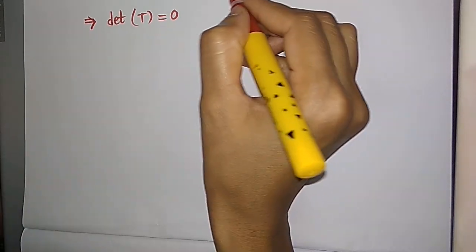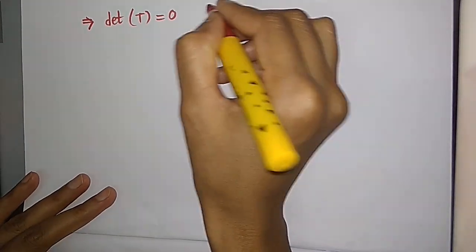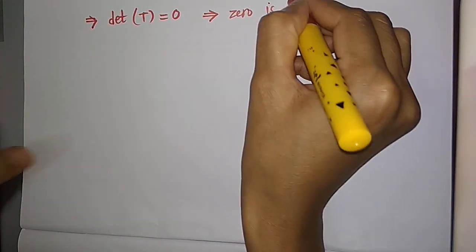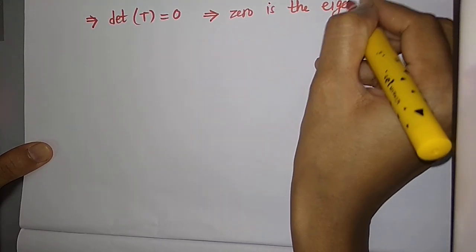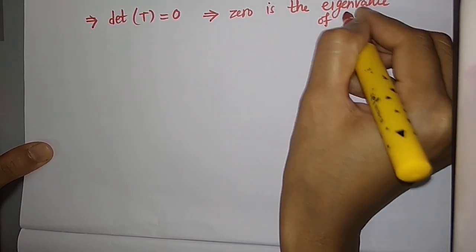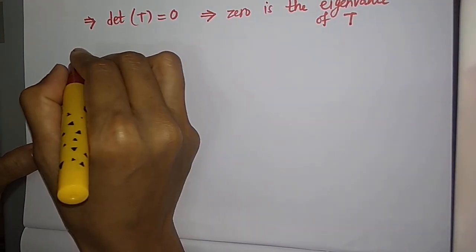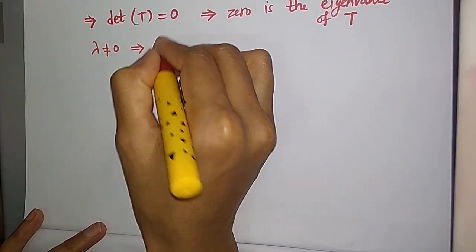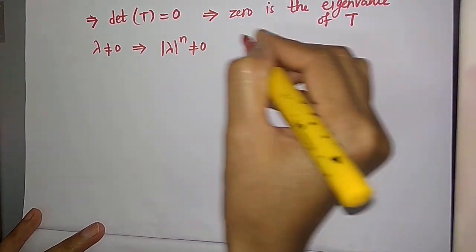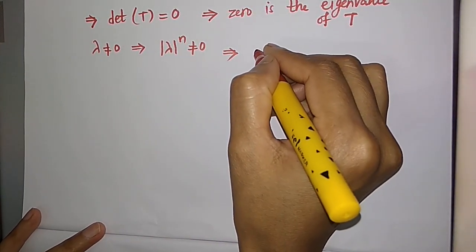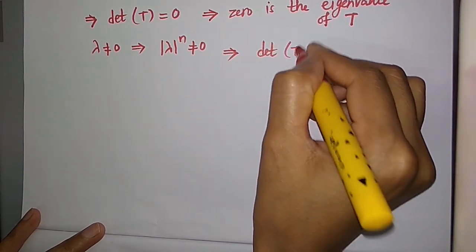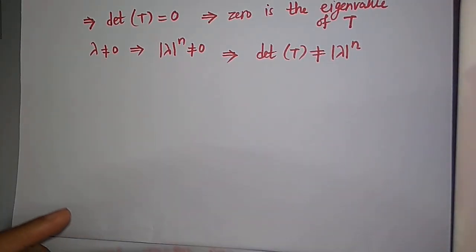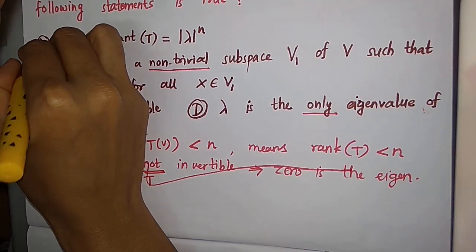Since T is not invertible, this implies det(T) equals 0. So 0 is one of the eigenvalues of T. Since lambda is not 0, |lambda|^n is not 0. Therefore det(T) cannot equal |lambda|^n, because det(T) is 0 but |lambda|^n is not 0. So option A is also false.